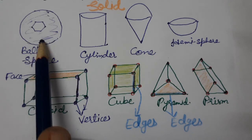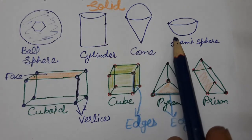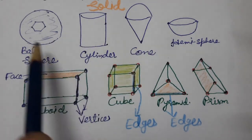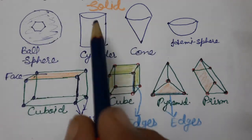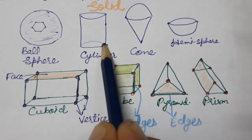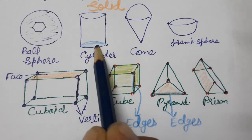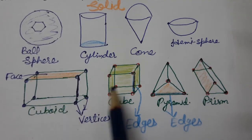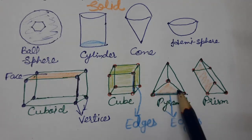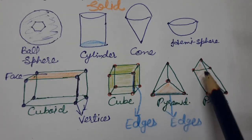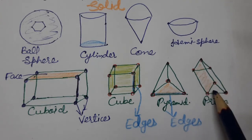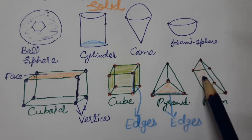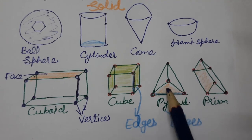Sphere, cylinder, cone, and hemisphere do not have straight edges — there are no straight edges on these curved shapes. But they do have bases. The flat circular part where a cylinder stands is its base. A cuboid stands on its base. A pyramid stands on a triangular or rectangular base, and a prism can have a rectangular or triangular base.